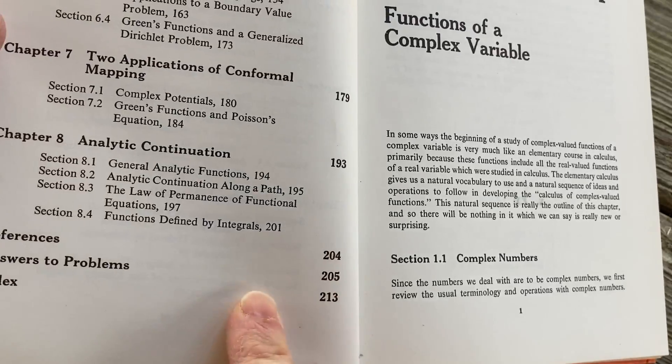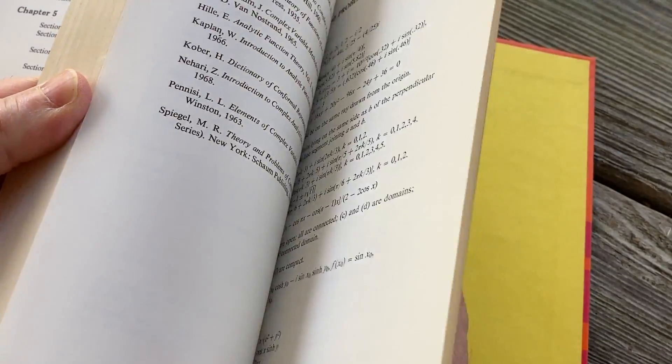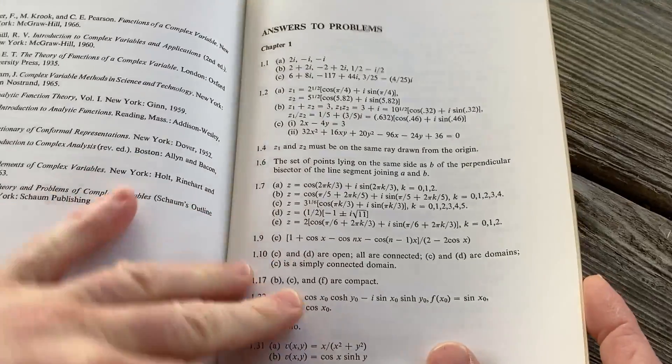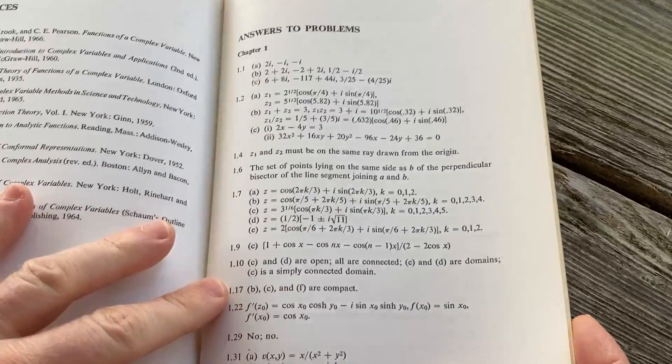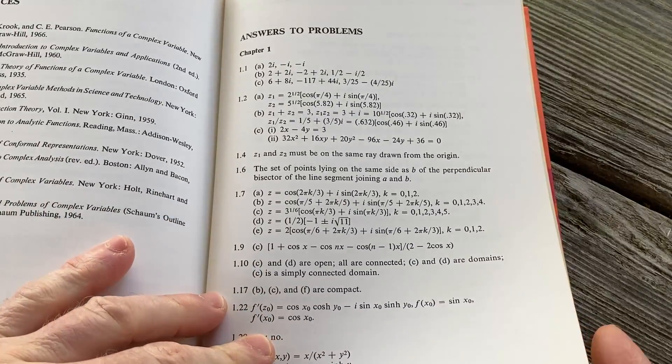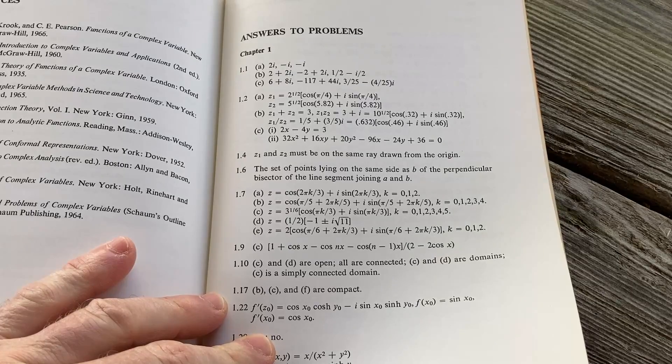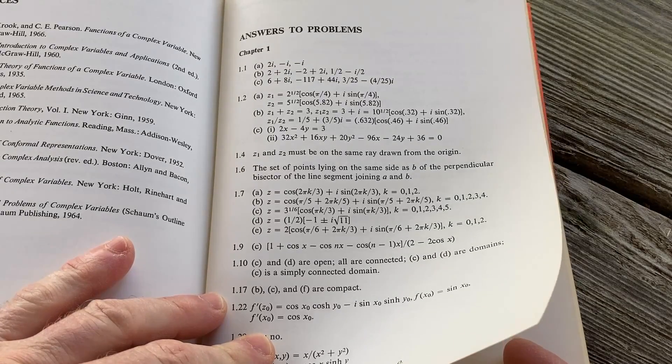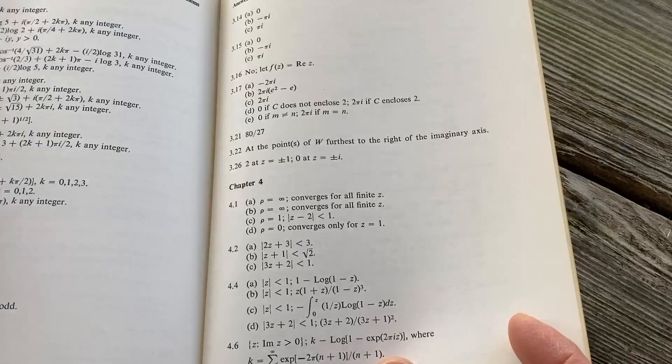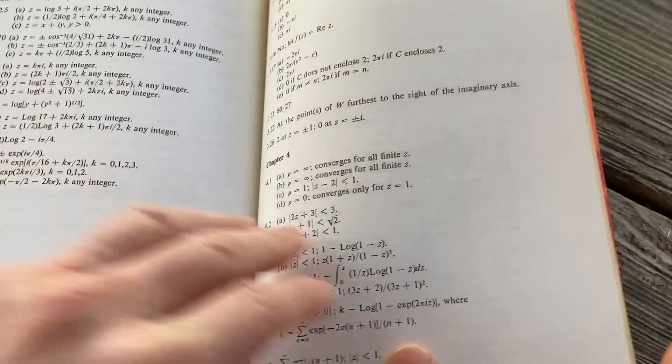It says there's answers to the problems on page 205. Let's just jump to that. And as you can see, there are some answers, but not all. But you do get quite a few here in the back of the book, which is pretty cool. I got to smell it. I'm sorry. Ah, smells amazing. 1973 here. What a piece of history.